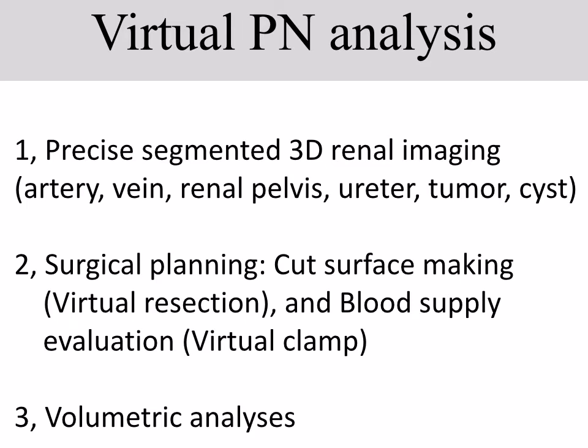The second step is surgical planning — we call it virtual operation. In this step, we are able to determine the proper size of the excision margin for each case. We also evaluate the blood supply by showing vascular supply territories. This is virtual arterial clamping. The final step is volumetric analysis and estimation of postoperative renal function. The strong point of this analysis is that it is a virtual operation — a basically non-invasive method for the patients — so we can try the virtual resection again and again to get the best planning result without performing the real operation.